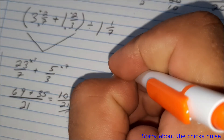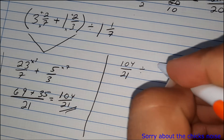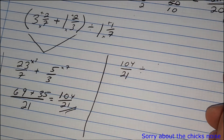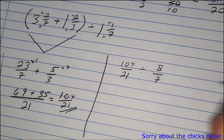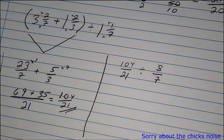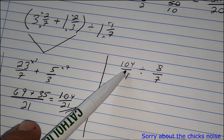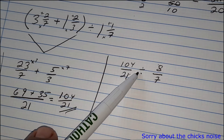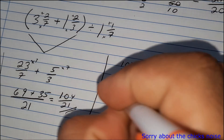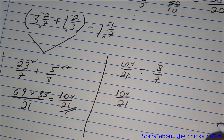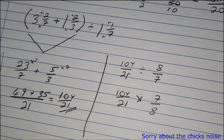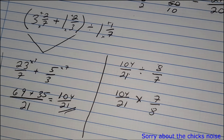We now divide one hundred and four over twenty-one by one and one-seventh. Convert one and one-seventh to an improper fraction: seven times one plus one is eight — so eight over seven. Keep-change-flip: keep one hundred and four over twenty-one, change division to multiplication, and flip to get seven over eight.